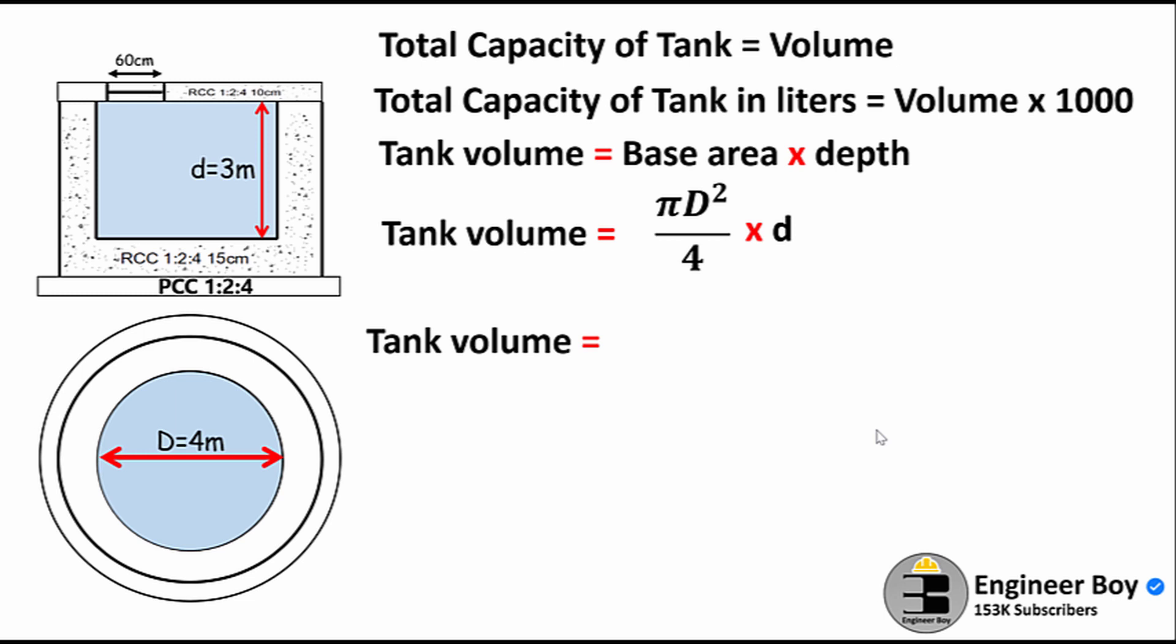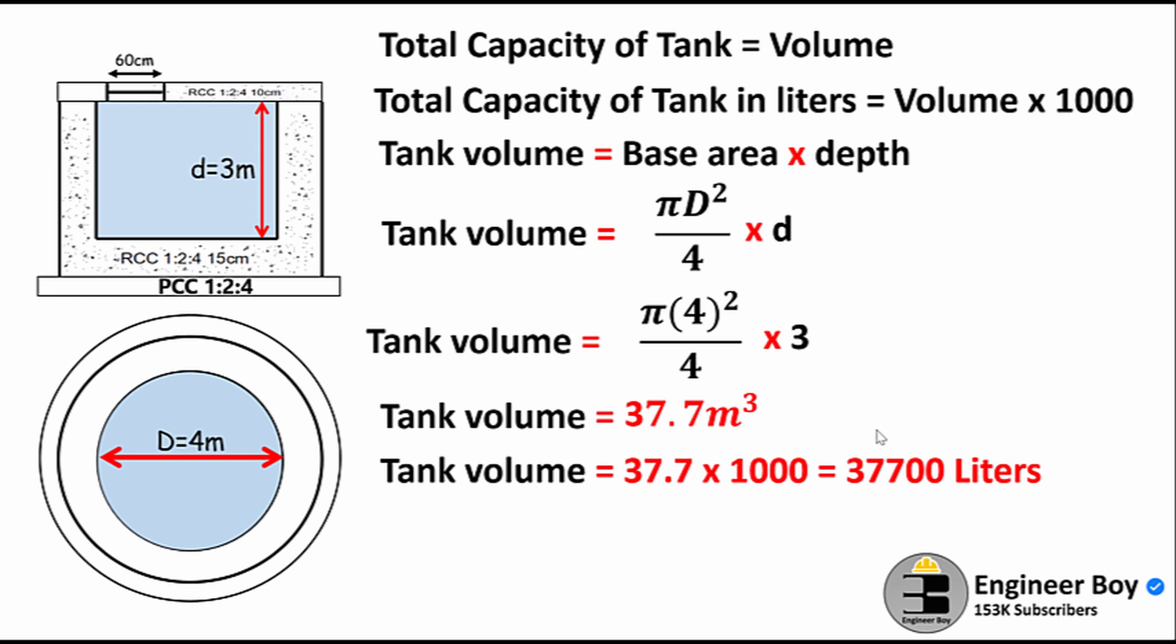So π times 4² divided by 4 times d, which is 3. Do some mathematics and you get 37.7 cubic meters - that's the tank's volume or the capacity in terms of volume. Just multiply this volume by 1000 and you get 37,700 liters as the capacity of the tank.